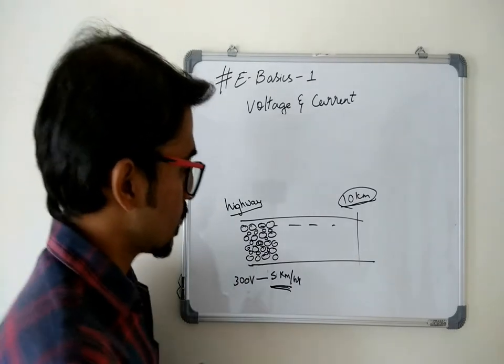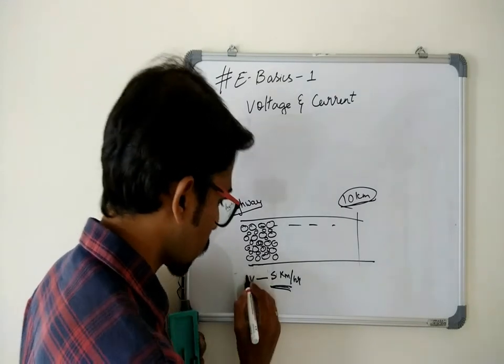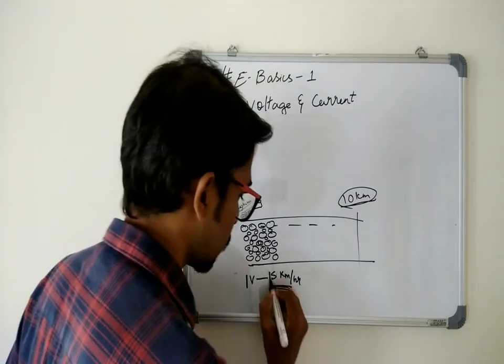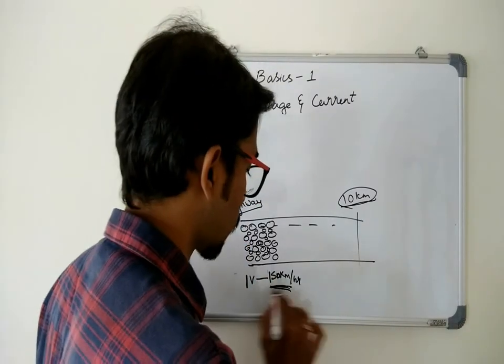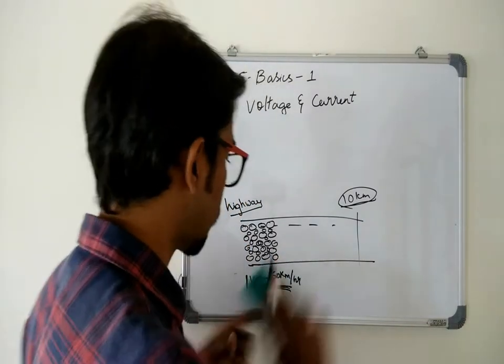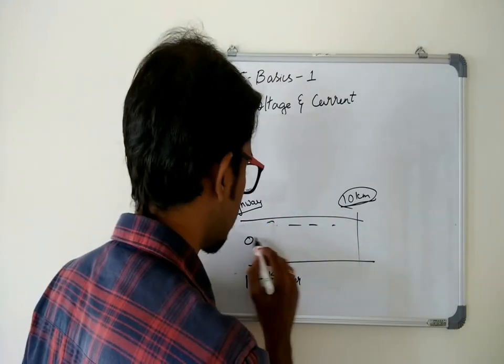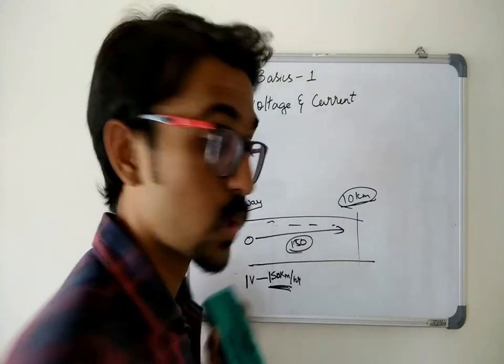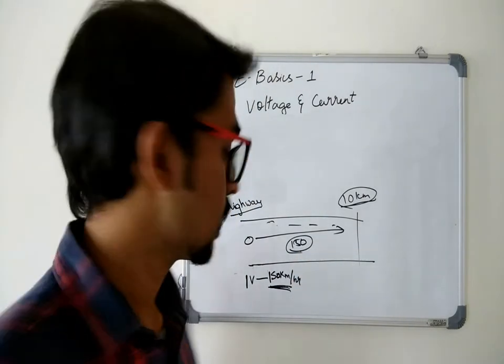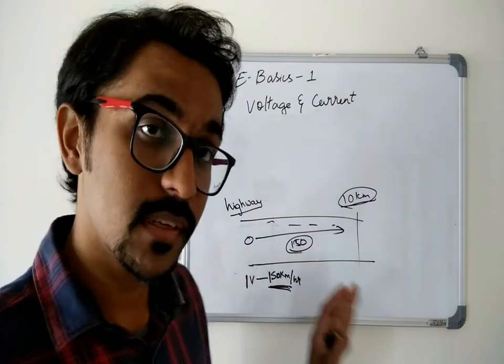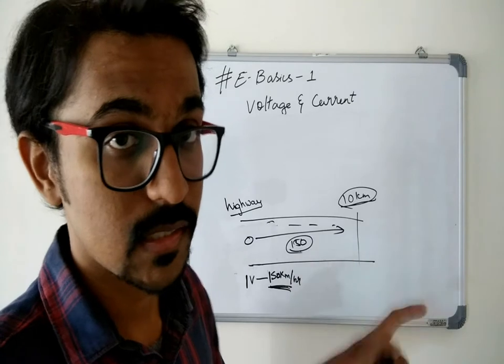Next we'll take one vehicle and again the same speed 150 kilometers per hour. That is dangerous because as I said more current. So one vehicle traveling at 150 kilometers per hour, that's quite fast. The person might slip and fall and hurt himself and maybe die. So in this example the speed really kills, that means the current is the one which kills.